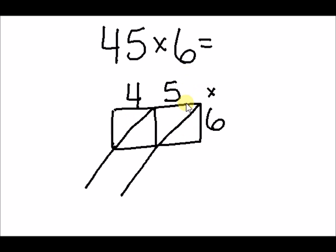We're ready to multiply. It does not matter if you start with the 4 or the 5 when you're doing this. However, it's a good habit to always start on the right. 5 times 6 is 30. So, we write our 2 digits, the 3 and the 0, on either side of that diagonal line in the box.